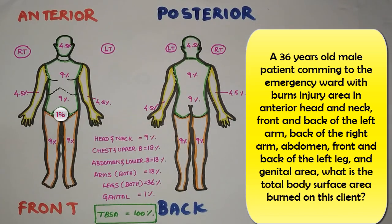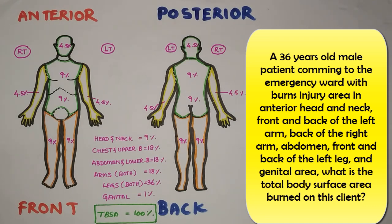Here we will go with some example. A 36-year-old male patient is coming to the emergency ward with a burn injury area involving the anterior head and neck, front and back of the left arm, back of the right arm, abdomen, front and back of the left leg, and genital area. What is the total body surface area burned on this client?